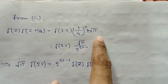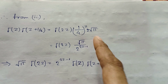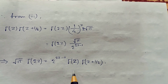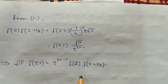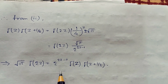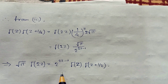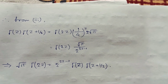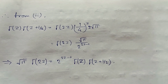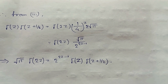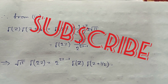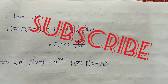Substituting the values of a and b into Equation 3 gives the final result, which proves Legendre's duplication formula. This completes the proof. Thank you for watching.